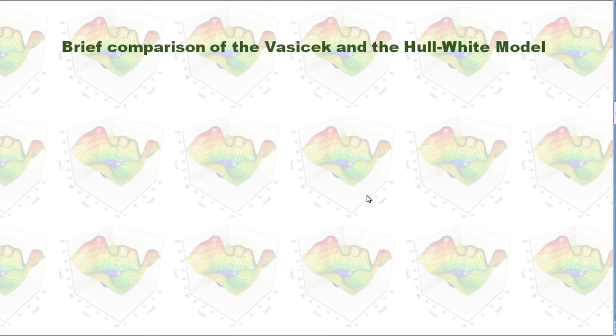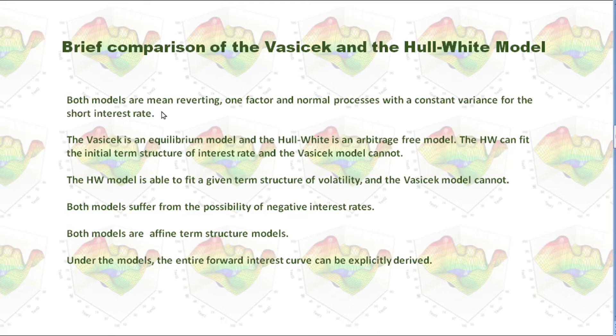Now, let's compare Vasicek model and the Hull-White model briefly. Both models are mean-reverting, one-factor and normal processes with a constant variance for the short interest rate. The Vasicek is an equilibrium model, and Hull-White is an arbitrage-free model. The Hull-White can fit the initial term structure of interest rate, and the Vasicek model cannot. Hull-White model is able to fit a given term structure of volatility, and the Vasicek model cannot. Both models suffer from the possibility of negative interest rates. Both models are affine term structure models. Under the models, the entire forward interest curve can be explicitly derived.